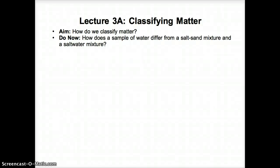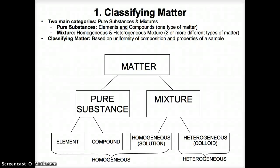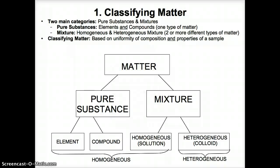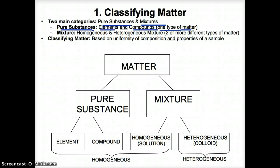Hello students and welcome to lecture 3A, Classifying Matter. Let's first discuss how to classify matter in terms of basic categories. The two main categories of matter are pure substances and mixtures. The two types of pure substances are elements and compounds, where you have just one type of matter, uniform properties all throughout, and a uniform composition throughout.